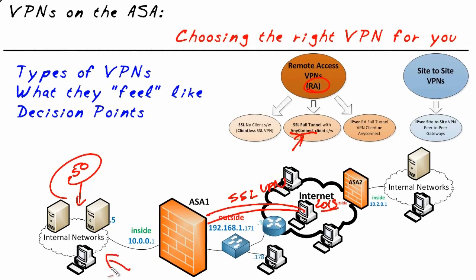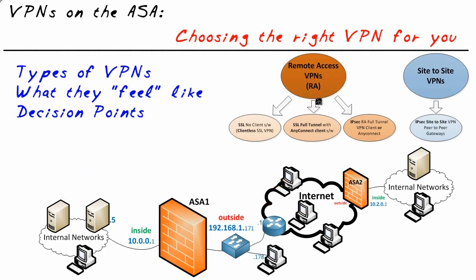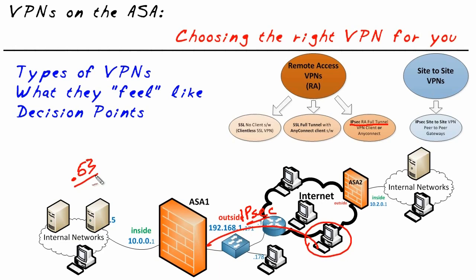The other option for remote access is the IPsec traditional client, sometimes called the IPsec VPN client. This gives Susan the same experience, except instead of SSL, it uses IPsec for security and authentication between her computer and the firewall. Once connected, she's given an IP address like .53 and has the same look and feel as if she were locally on the network. The AnyConnect software client can also use IPsec for this type of tunnel. So we have two options for full tunnel access: SSL with AnyConnect, and IPsec via the VPN client or AnyConnect client.